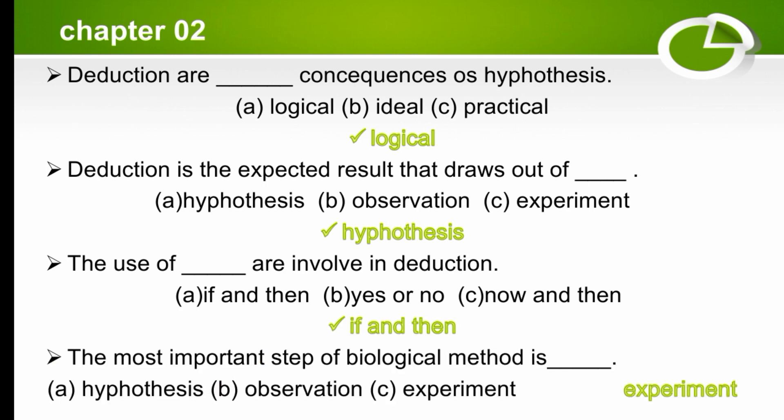The most important step of biological method is which? The options are hypothesis, observation, or experiment. The most important step of biological method is experiment.